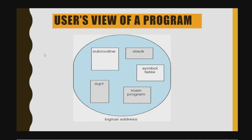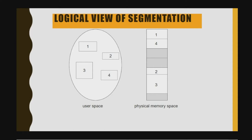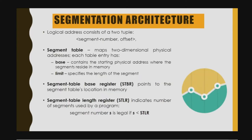The next part is about the logical view of segmentation. This is the computer's physical memory space. When we talk about memory you can imagine this kind of block — memory has several parts. From the user's space it will be stored to the memory, mapping segments one, four, two, and three. We have the logical address and then we map the logical address to the physical address in main memory.